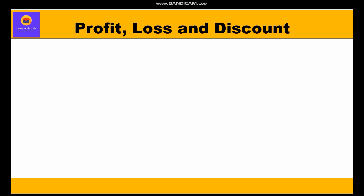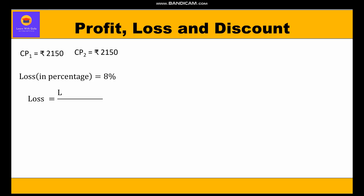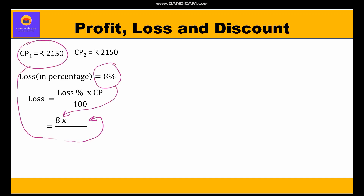The cost price of both saris is the same, rupees 2150, but one is sold at a loss of 8 percent. Loss equals loss percent × cost price / 100. Substituting: 8 × 2150 / 100 = rupees 172.